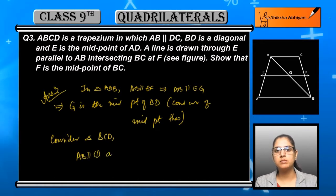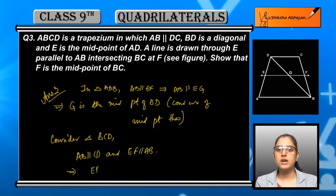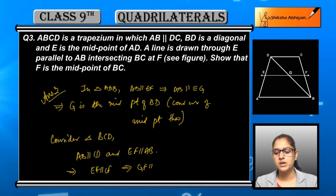The converse - if we see, it is because of this reason that G becomes the midpoint of BD. Now what we will do is consider the second triangle, that is triangle BCD.